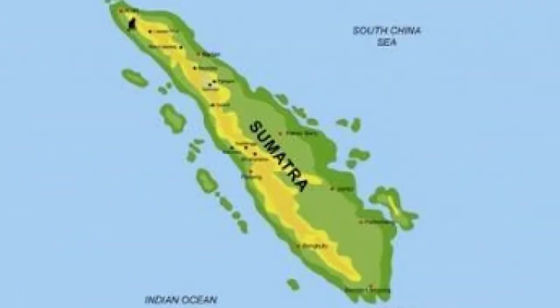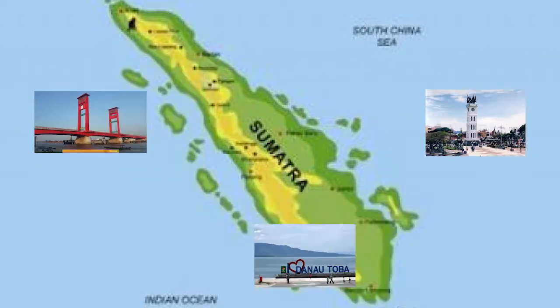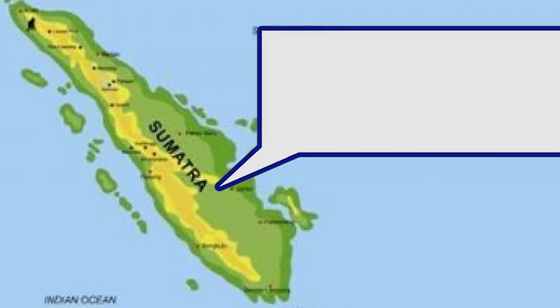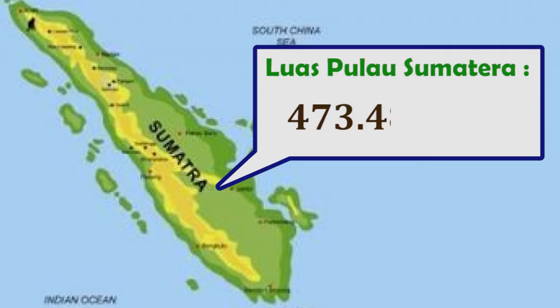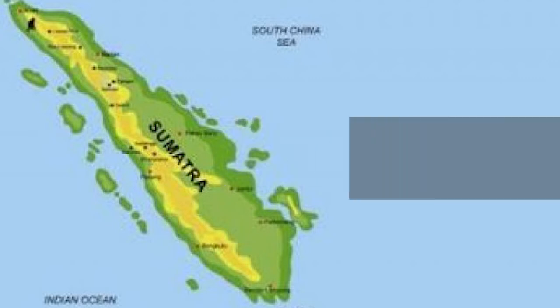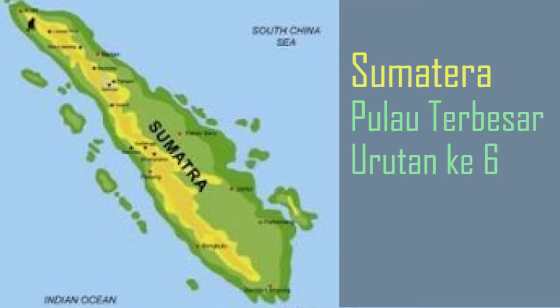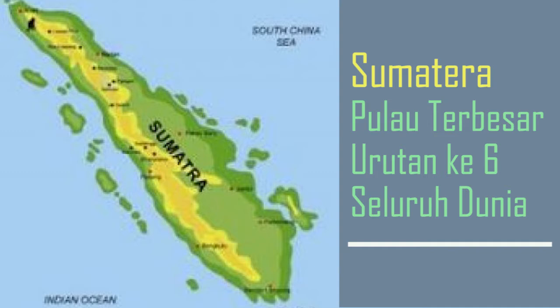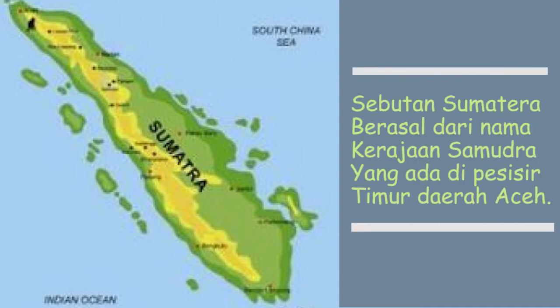Nah, anak-anak, setelah mempelajari tentang Pulau Jawa, sekarang kita mempelajari pulau di ujung barat Indonesia, yaitu Pulau Sumatra. Dengan luas sebesar 473.481 km persegi, Sumatra menjadi pulau terbesar ke-6 di dunia. Nama Sumatra sendiri berawal dari keberadaan Kerajaan Samudera yang terletak di pesisir timur Aceh.